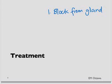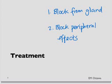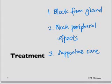Let's talk about the different kinds of treatment. Treatment is divided into four different components. First, we block the hormone from the thyroid gland. Second, we block the peripheral effects of the hormone. Thirdly, we give supportive care to the patient, ensuring that ABCs are all right. And fourthly, we look for the trigger and treat it.